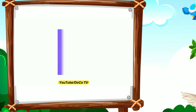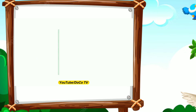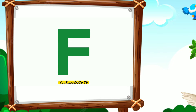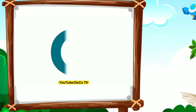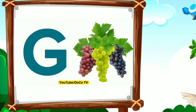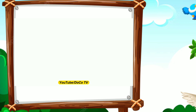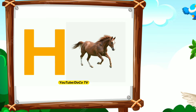E. E for elephant. F. F for frog. G. G for grapes. H. H for horse.